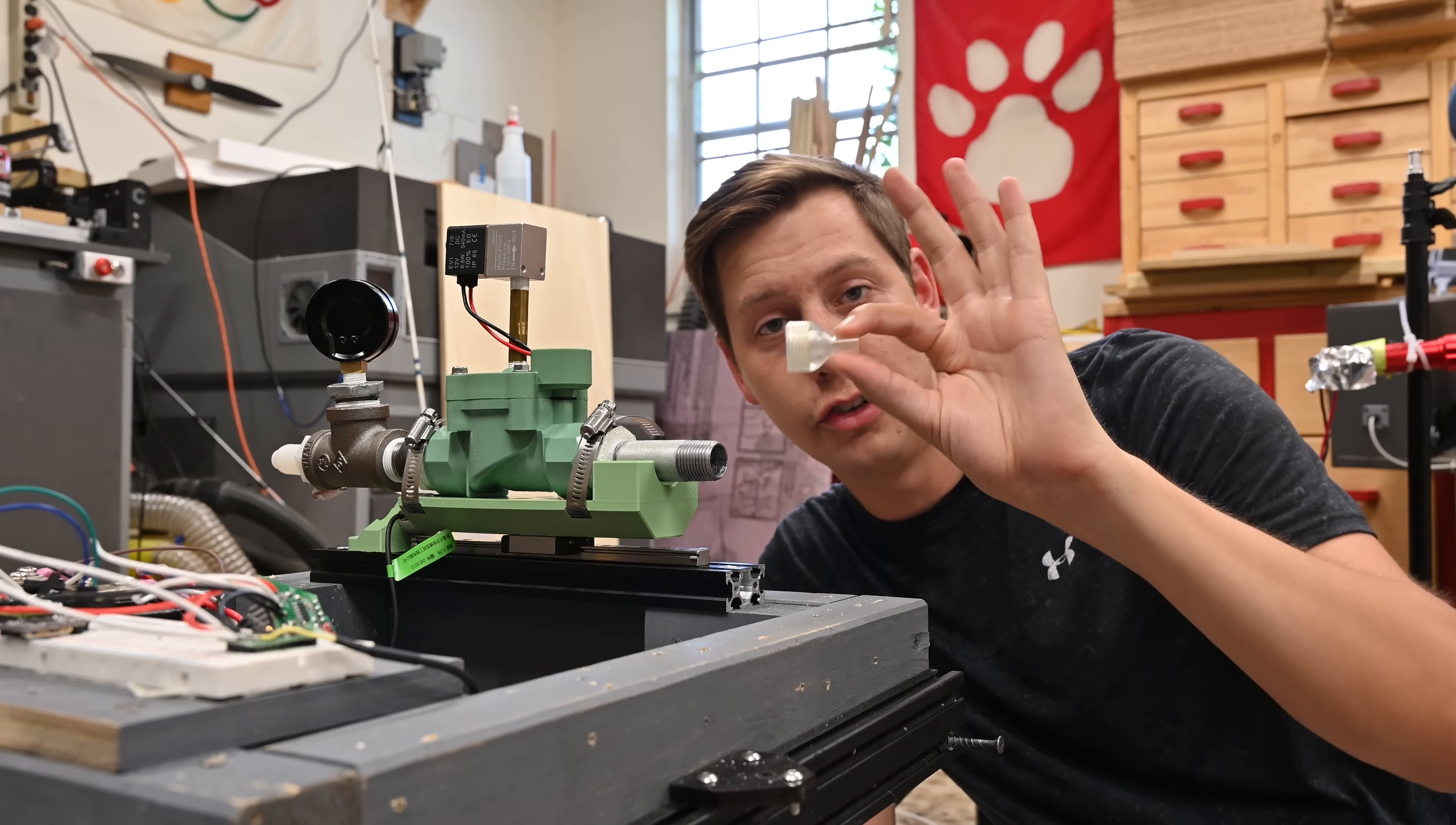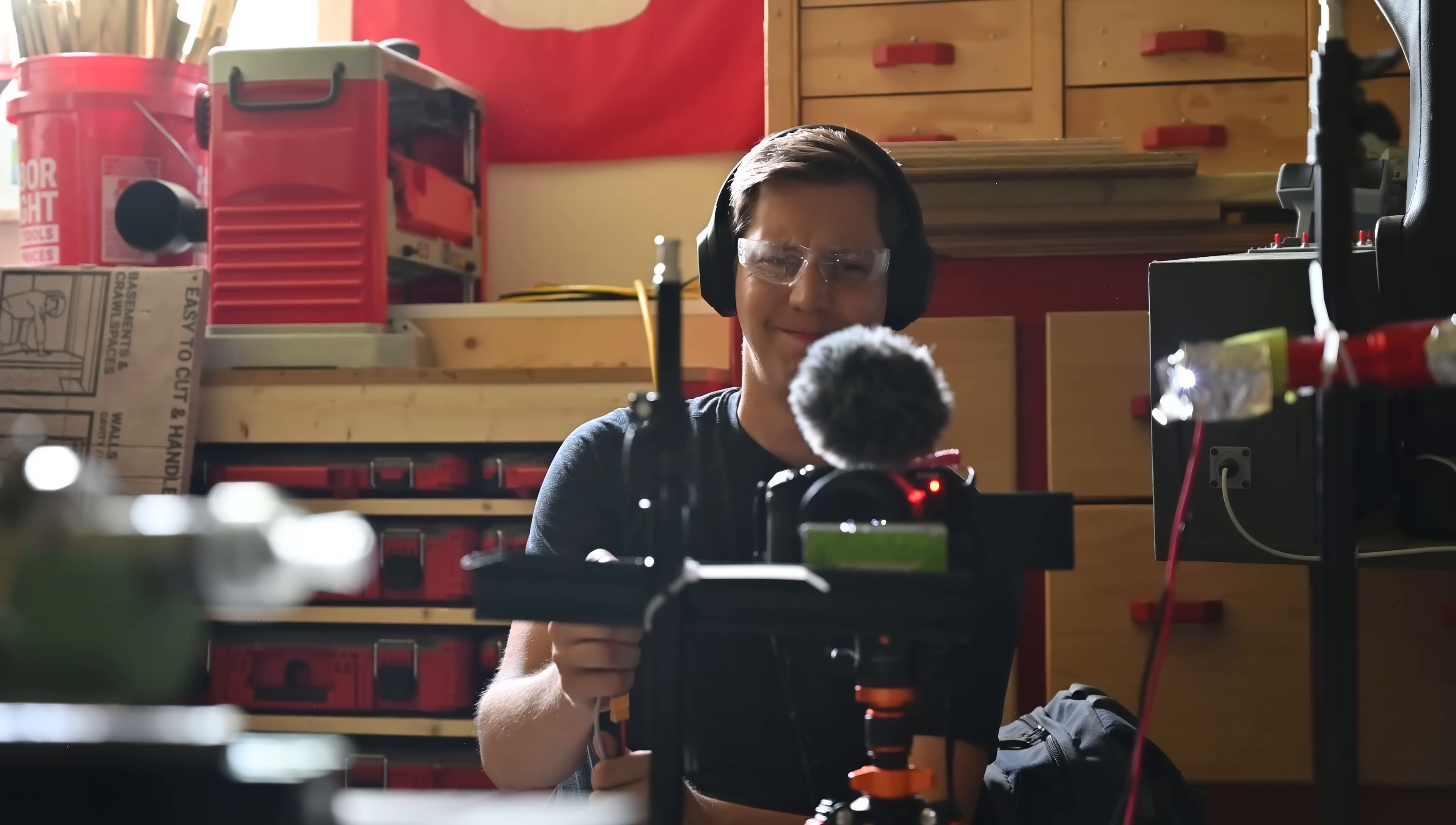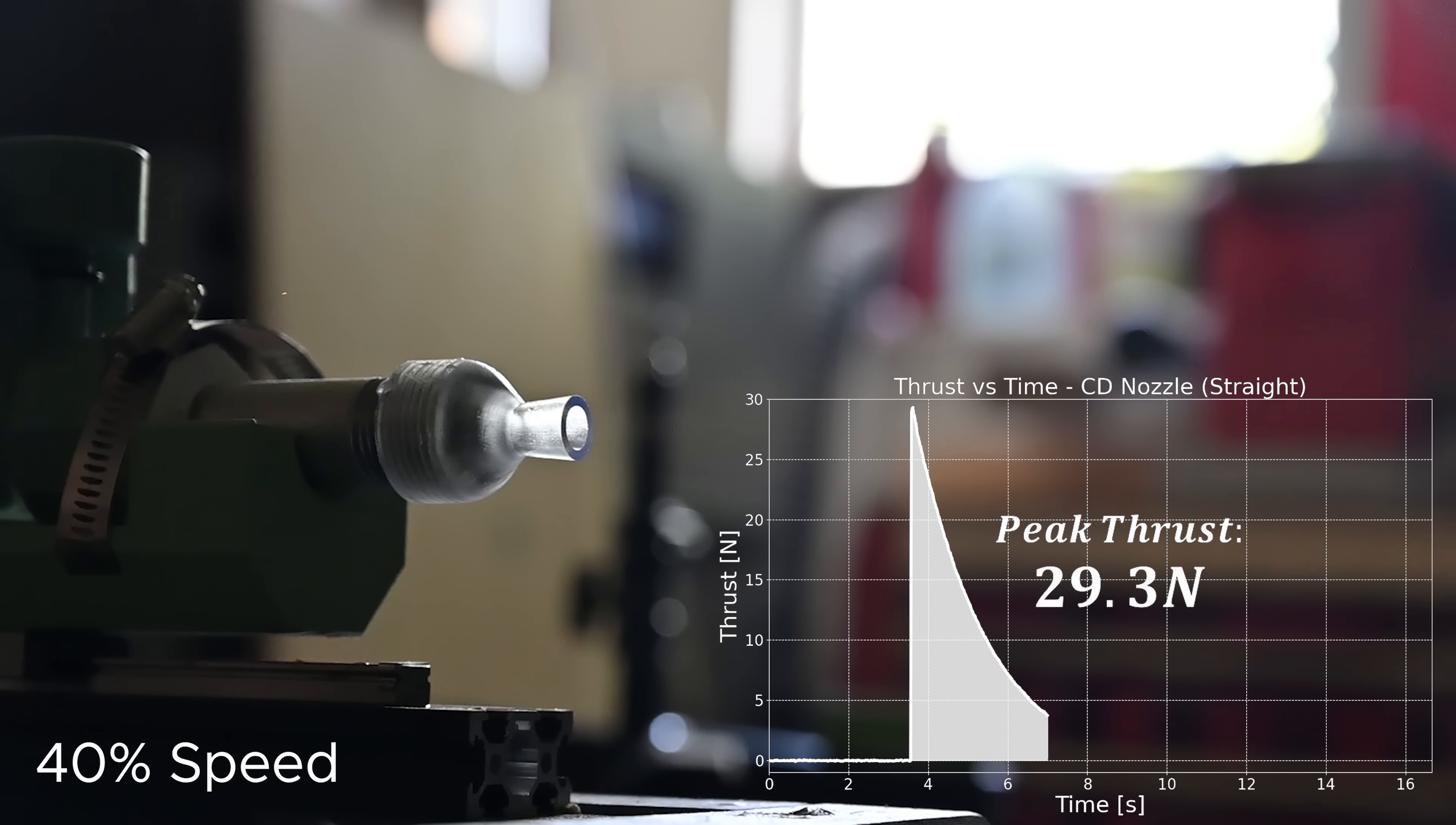All right, next up is a converging diverging nozzle. This one just has straight walls. Three, two, one. This nozzle made a peak of 29.3 newtons of thrust. That's 4.5% more than the converging-only nozzle.